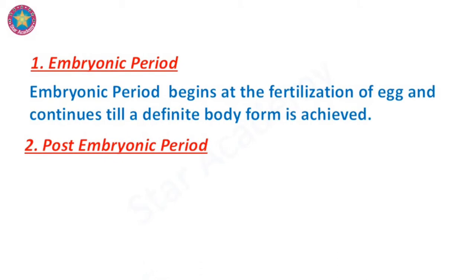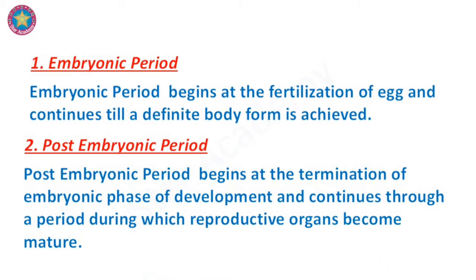The post-embryonic period begins at the termination of the embryonic phase and continues through a period during which reproductive organs become mature. All types of viruses, bacteria, plants and animals need their individual members to multiply to produce new individuals to replace those killed by predators, old age, parasites, or ecological hazards such as shortage of oxygen, moisture, light, optimum temperature, food, exposure to excessive temperature, radiation, and other ecological pollution.